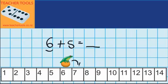So that's 1, 2, 3, 4, and 5. And you can see that takes me to 11. So 6 plus 5 equals 11.